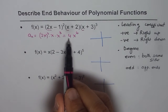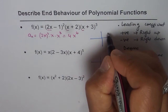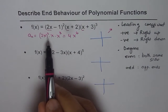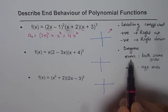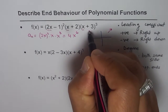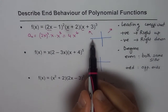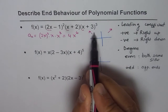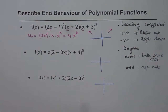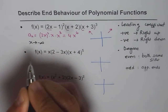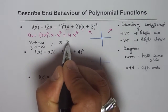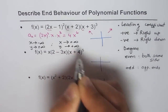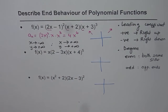We have a positive leading coefficient, which means the right side is up. The degree of this polynomial is 6, which is even — even degree means both ends are on the same side. So the end behavior is: as x approaches negative infinity, y approaches positive infinity, and as x approaches positive infinity, y also approaches positive infinity. In both cases y approaches positive infinity — the function opens upwards.